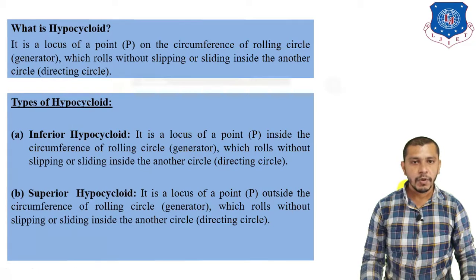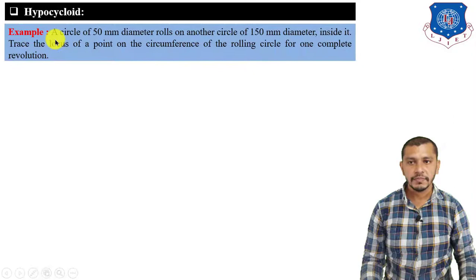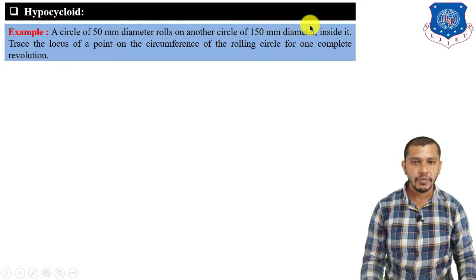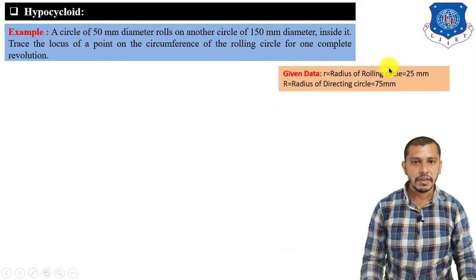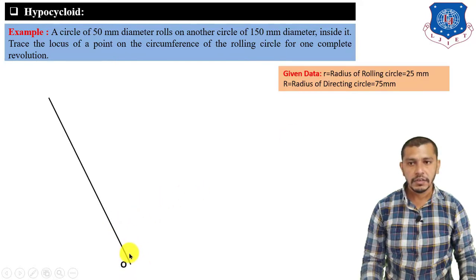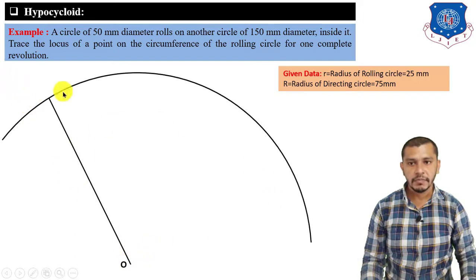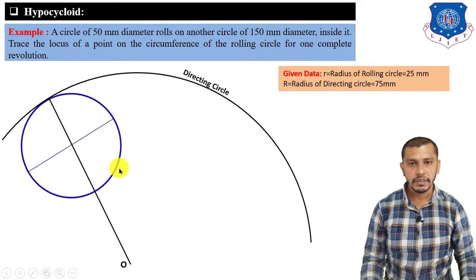Let's start with the problem of hypocycloid. The given data is: a circle of 50 mm diameter rolls on another circle of 150 mm diameter and inside of it — trace the locus of a point on the circumference of the rolling circle for one revolution. The radius of the generating circle is 25 mm and the radius of the directing circle is 75 mm. First draw the directing circle with radius 75 mm from center O, then draw the rolling circle with radius 25 mm inside it.